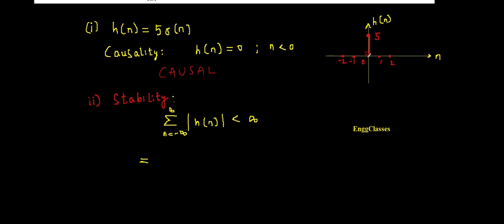The signal exists only at n equal to 0 and its value is 5. So I have to add up all 0s plus 5 plus all 0s until plus infinity. Ultimately, I am going to get 0 plus 5 plus 0, which is 5. As we know that 5 is less than infinity, the system is stable.